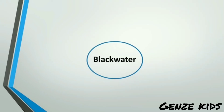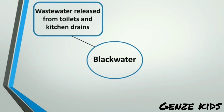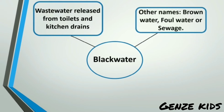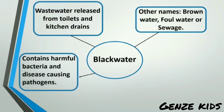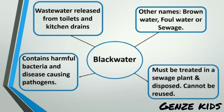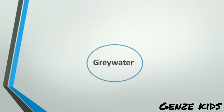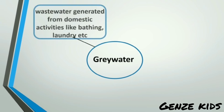Black water is wastewater released from toilets and kitchen drains. Other names include brown water, foul water, or sewage. It contains harmful bacteria and disease-causing pathogens, and must be treated in a sewage plant and disposed of properly. It cannot be reused.